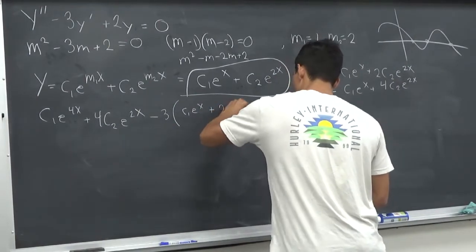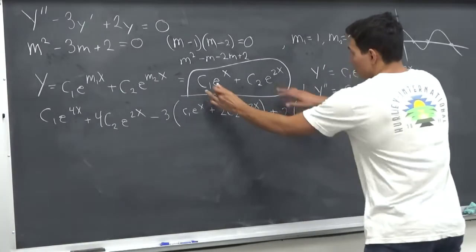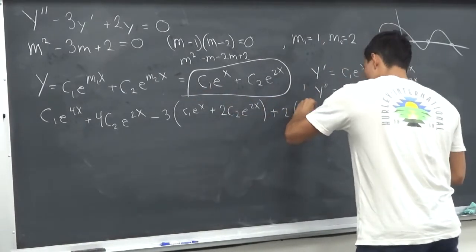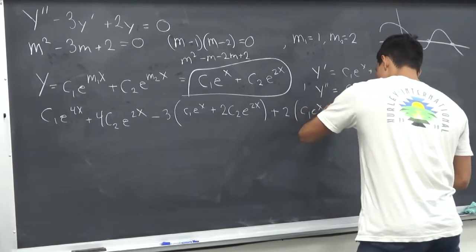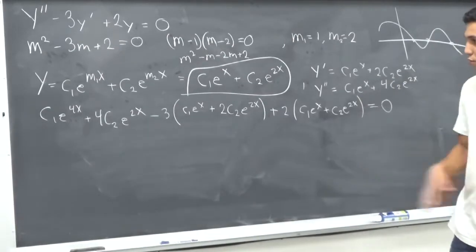2 C2 e to the 2x, then plus 2 of what? 2 of this. C1 e to the x plus C2 e to the 2x. And apparently all this is equal to 0. Let's see if that's true.